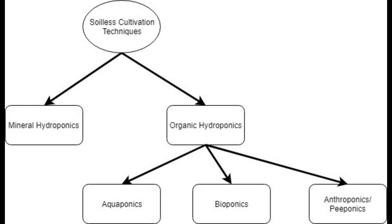Starting with the first one: soilless cultivation actually just means that you don't use soil. Soil cultivation, or traditional agriculture — more rarely known as geoponics —